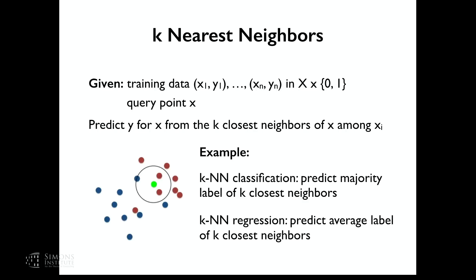So what is k-nearest neighbors? This is one of the simplest pattern recognition methods, from back in the 1950s. You are given training data x1, y1 to xn, yn, where x lies in some space X and labels lie in {0,1}. Given a query point x, you want to predict y for x based on the k closest neighbors of x among the training data — you do some processing and predict y based on just these points.